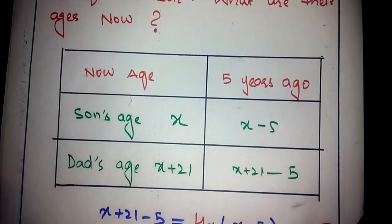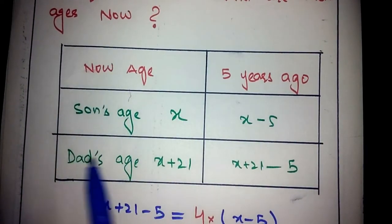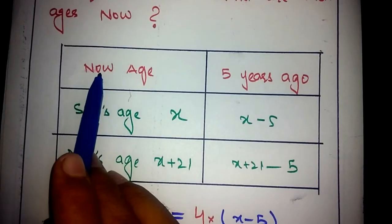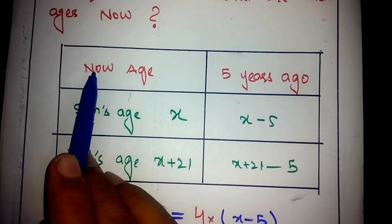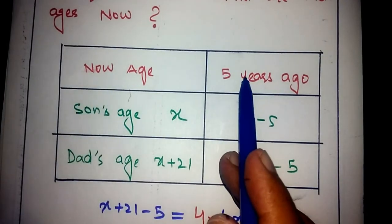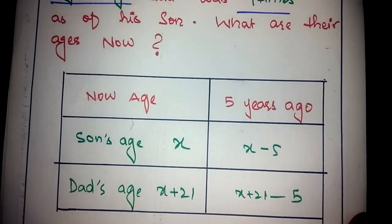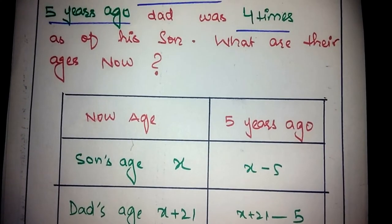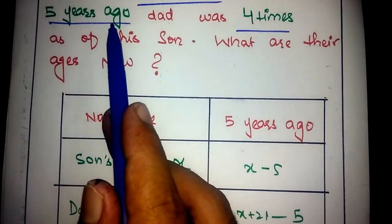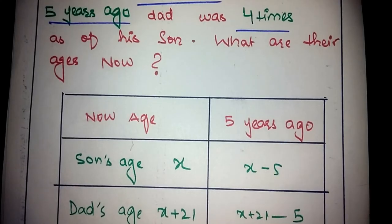The next step is to draw a table with 6 blocks, 2 columns and 3 rows. In the first column write the present ages, and in the second column write the ages 5 years ago, as given in the problem.